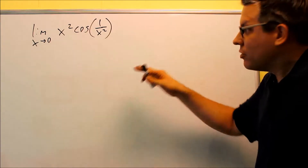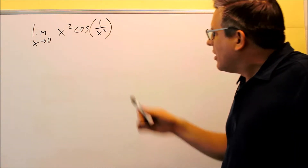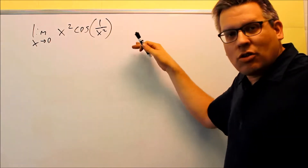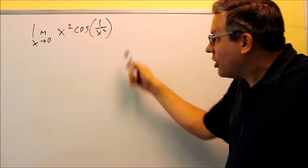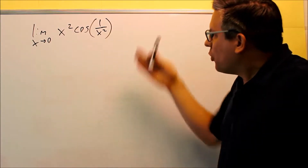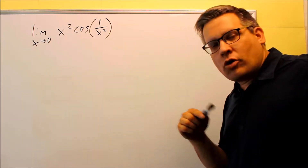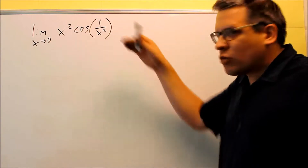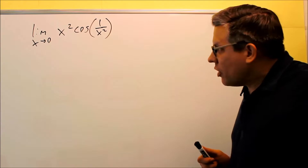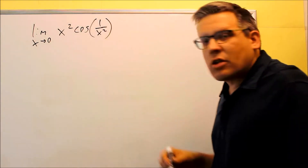We're going to apply the sandwich theorem to this particular problem. If I put zero in, I get division by zero, and there are no algebraic techniques I can use to change that. I can't use any identities for cosine either, so this is a case where we wouldn't really know how to do this except by making tables or looking at a graph. We're going to do this algebraically using the sandwich or squeeze theorem. Let's start with the most complicated part, which is the cosine.